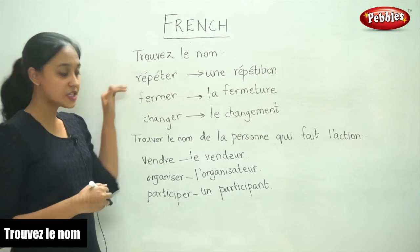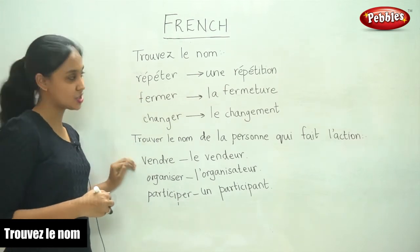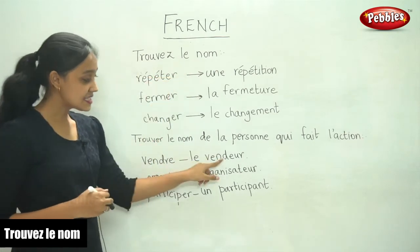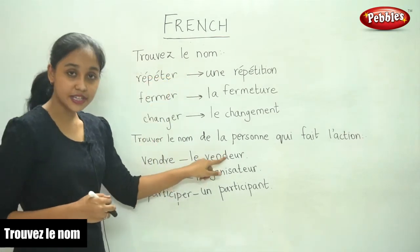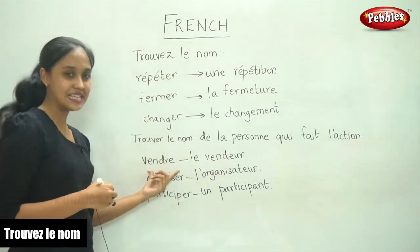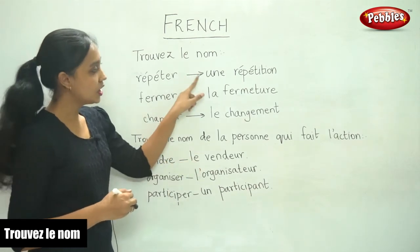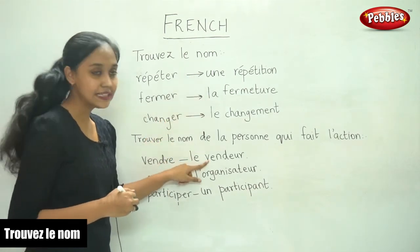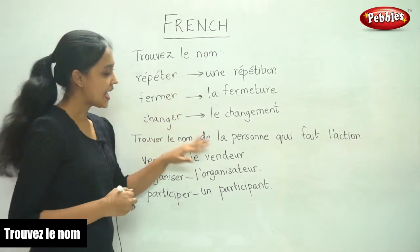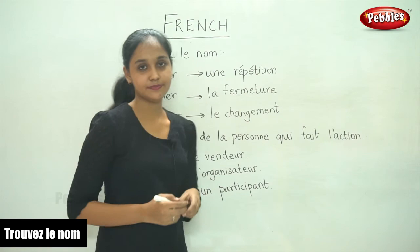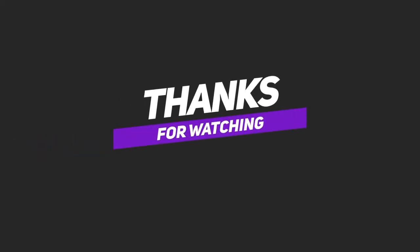I hope you understood the difference between these two. This is the noun form of the verb, and this is the name - the noun for the person who does this action. I hope you understood how to write the noun form as well as the name of the person doing the action. Thank you.